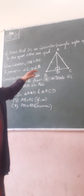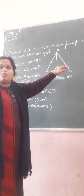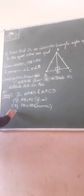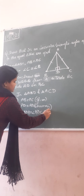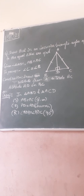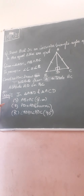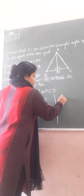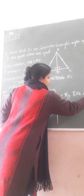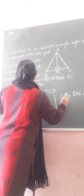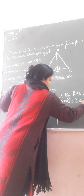After establishing these conditions, we write angle ADB is equal to angle ADC. By RHS congruence, triangle ABD is congruent to triangle ACD.